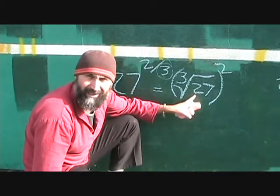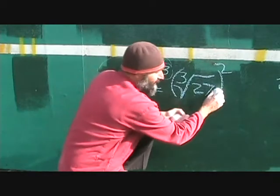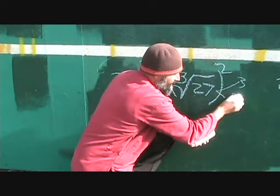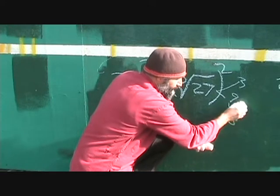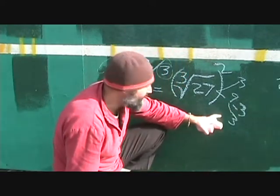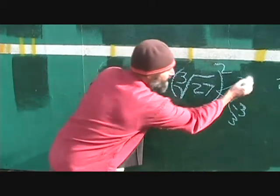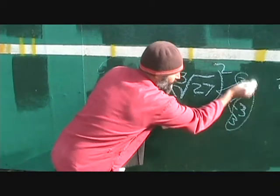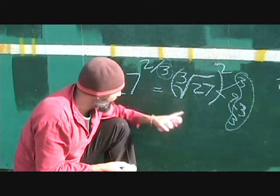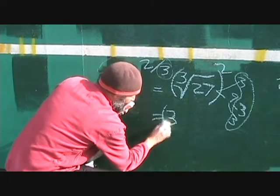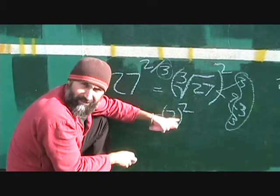Now, the cube root of 27 — break it down into its prime factors. 27 is 3 times 9, and 9 is 3 times 3, so 27 is 3 times 3 times 3. You want the cube root of it, which means you're looking for triplets. You've got your triplet right here, so these three 3s come out of the root symbol as a single 3. So this becomes 3 squared, and 3 squared is 9. So 27 to the power of 2 over 3 equals 9.